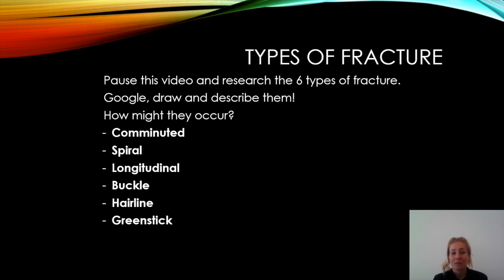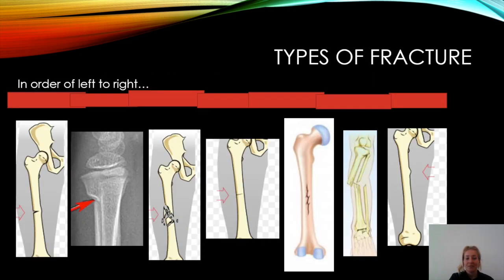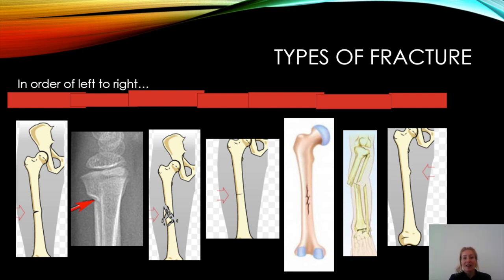You're going to need this information for a quick quiz coming up next. You should now know exactly what those six different types of fractures are and be able to identify them. You've got some pictures here — your job is to write down, in order from left to right, what type of fracture each picture is showing. Once you've done that, unpause this video. Are you ready to find out the answers?